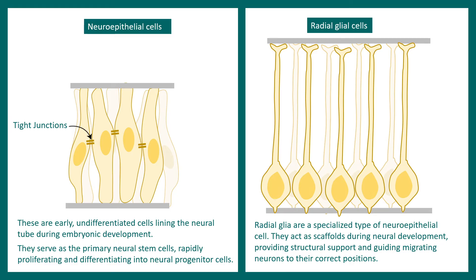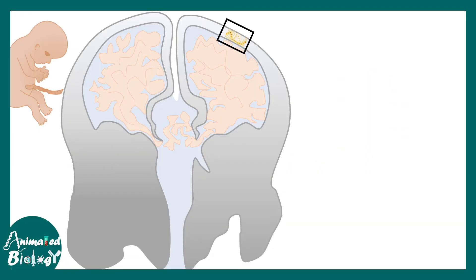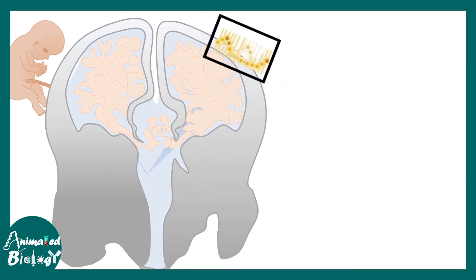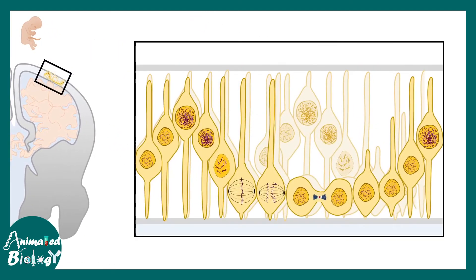These neuroepithelial cells or radial glial cells in the human brain show a typical cell migration behavior known as interkinetic nuclear movement. In order to understand the process of interkinetic cell movement, or the cell division during the generation of these radial glial cells, we have to take a step back and try to understand this dynamic process. We are now looking at one section of the early embryonic brain, and at that point in development you can see the brain looks pretty smooth.